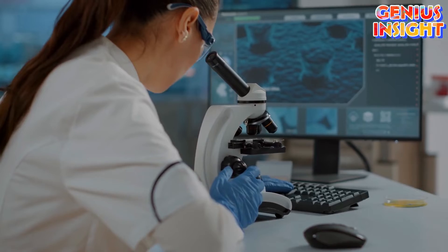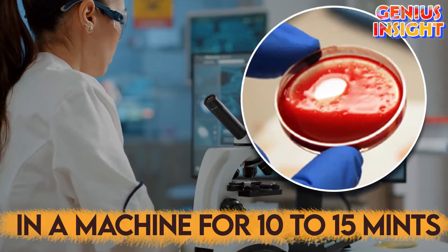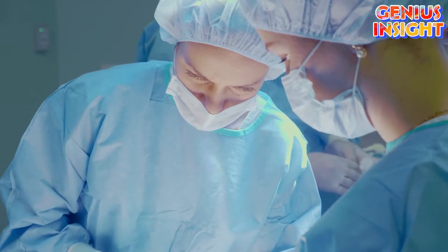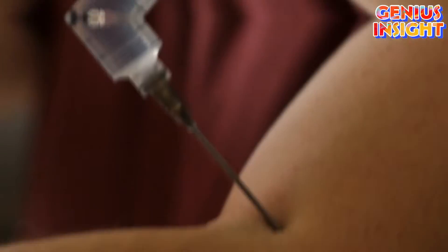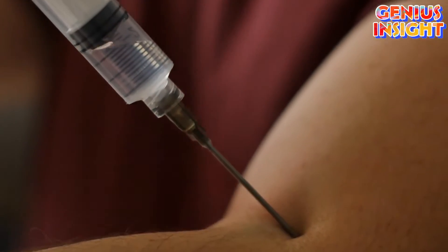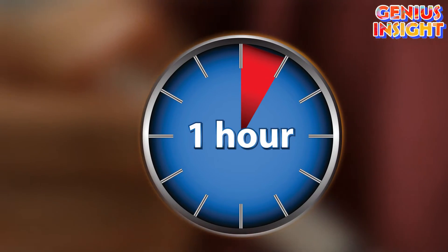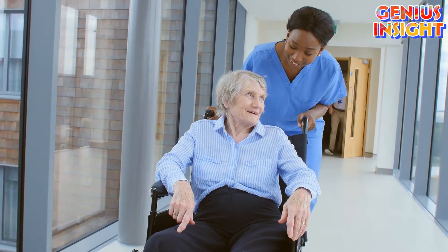The aspirate is spun in a machine for 10 to 15 minutes in the laboratory, and a concentrated stem cell sample is separated. Your doctor then cleans and numbs your affected area to be treated, and then injects the stem cells into the diseased region under the guidance of special x-rays. The whole procedure usually takes almost one hour, and you may return home on the same day of the procedure.